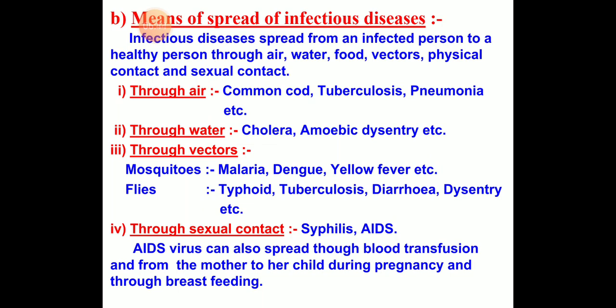By sexual contact: syphilis and AIDS. The AIDS virus can also spread through blood transfusion — donating blood from an infected person to a healthy person — and from mother to fetus during pregnancy, and by breastfeeding.